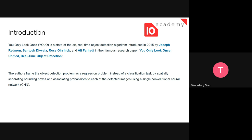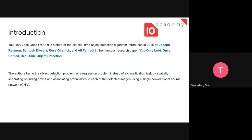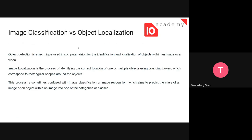It is recommended to use regression models rather than classifying an image into a specified number of categories. Using neural networks for image classification was the preferred idea, and that is where YOLO originated from.